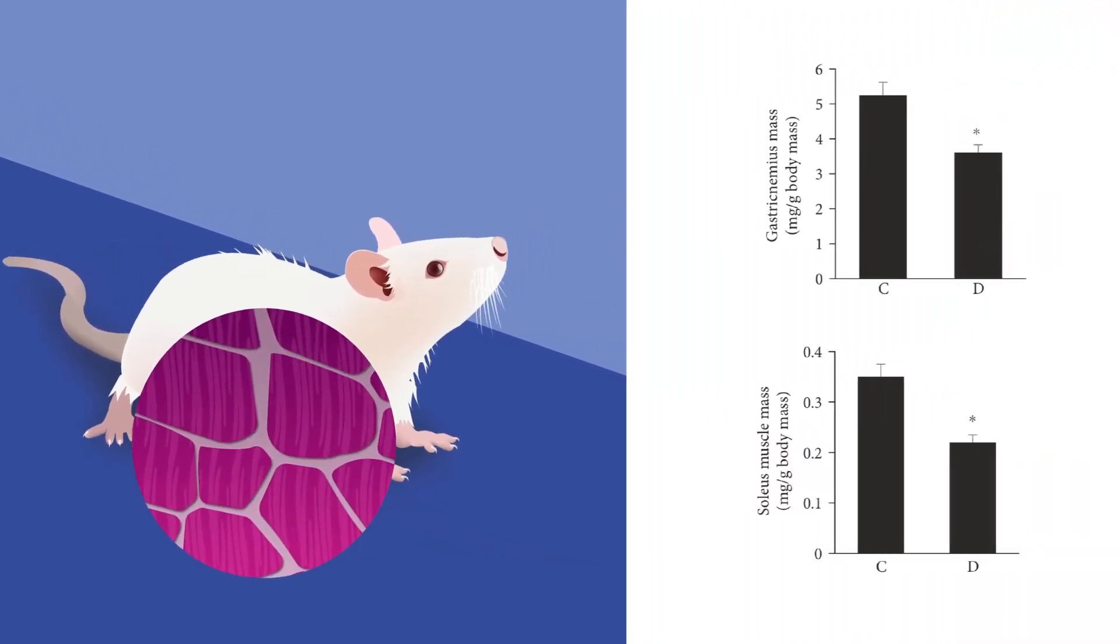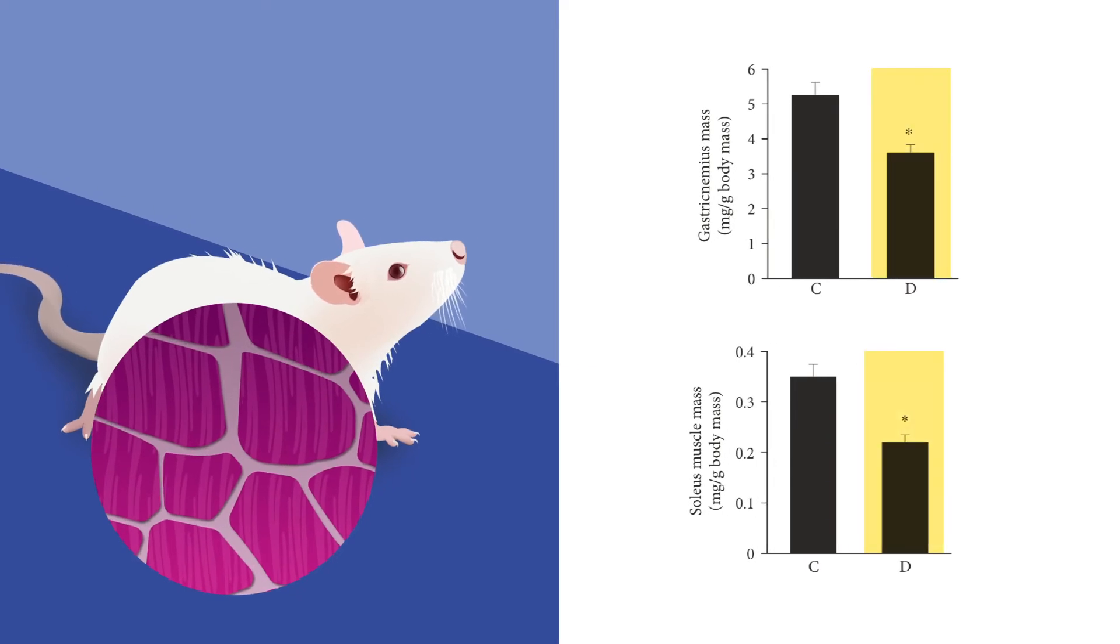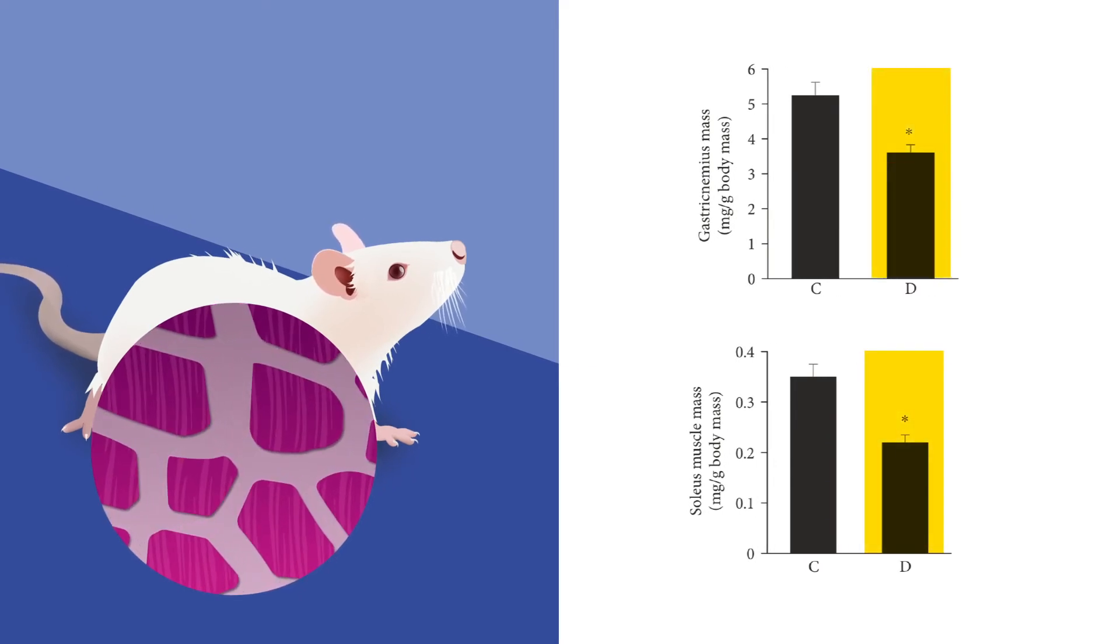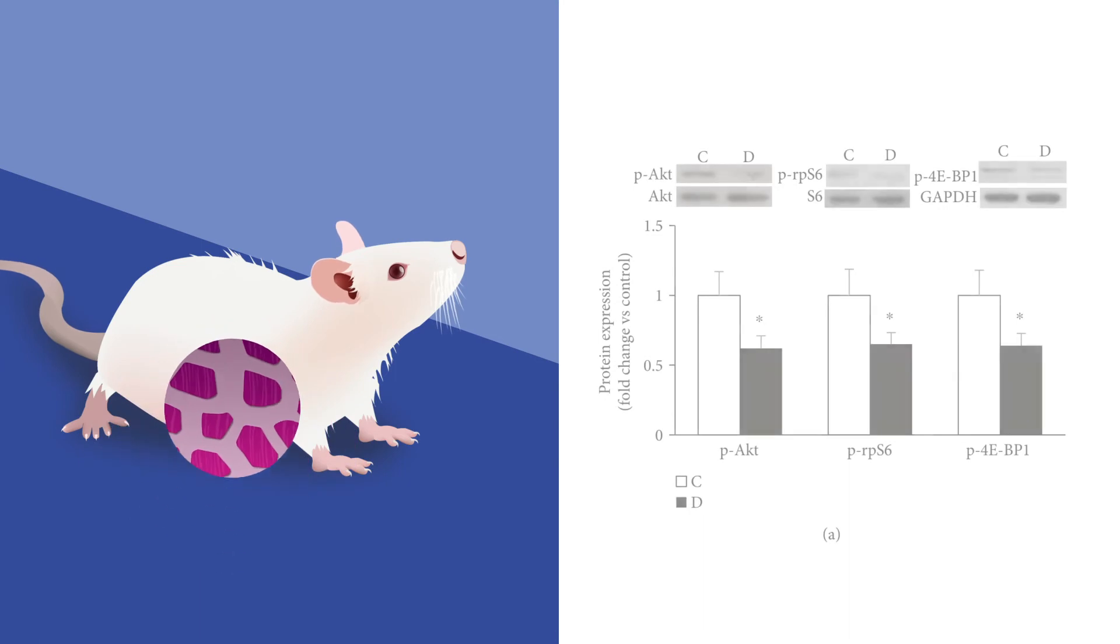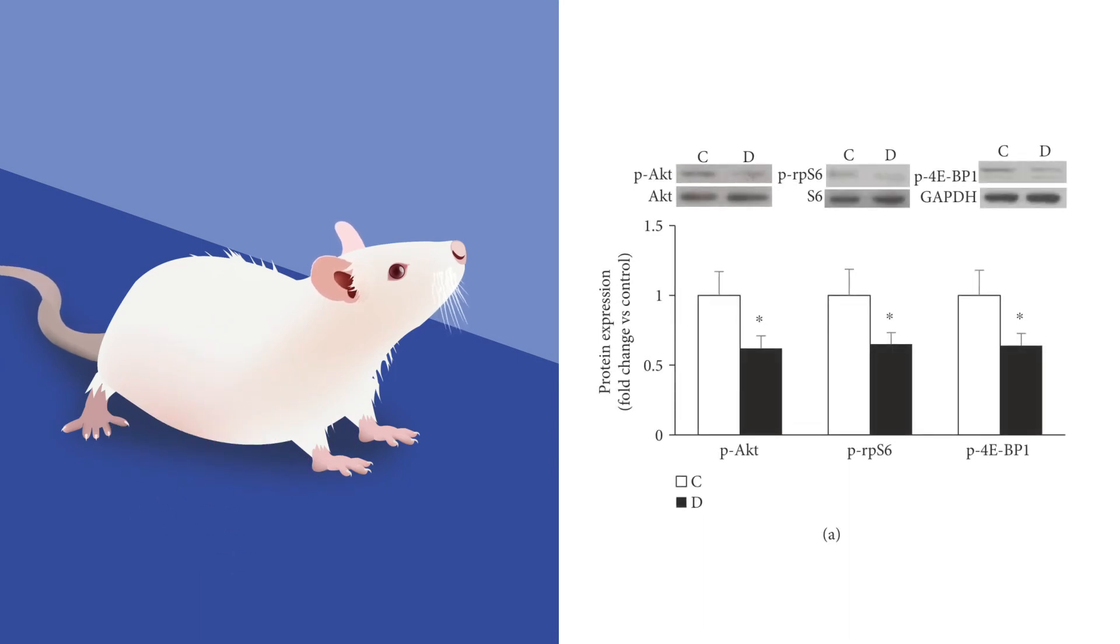Like humans, diabetic rats experienced reduced muscle mass and strength compared to controls, even showing a significant decrease in their muscle protein composition. Supporting evidence showed that diabetic rats have decreased levels of key regulators involved in protein synthesis, which worsened the rat's muscle condition by tipping their biochemical balance toward protein degradation.